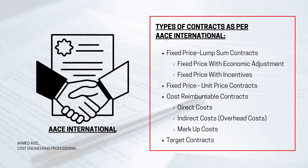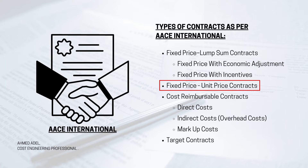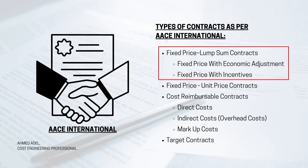Starting with the types of contracts as per AACE International, we have four main types: fixed price lump sum contracts, fixed price unit price contracts, cost reimbursable contracts, and target contracts. AACE also splits fixed price lump sum contracts further into fixed price with economic adjustments and fixed price with incentives.